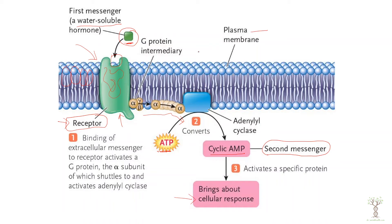For example, suppose this hormone is insulin binding to an insulin receptor on a liver cell. This cascade of signaling reactions causes the liver cell to increase glucose transporters, because insulin tells cells to take up blood sugar, and they do that with glucose transporters.